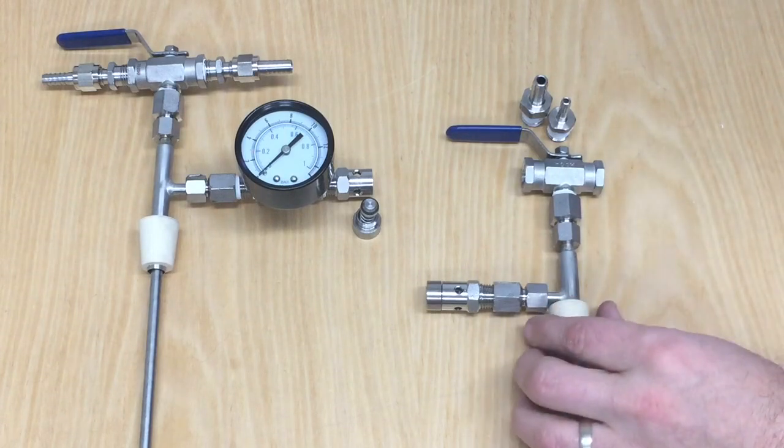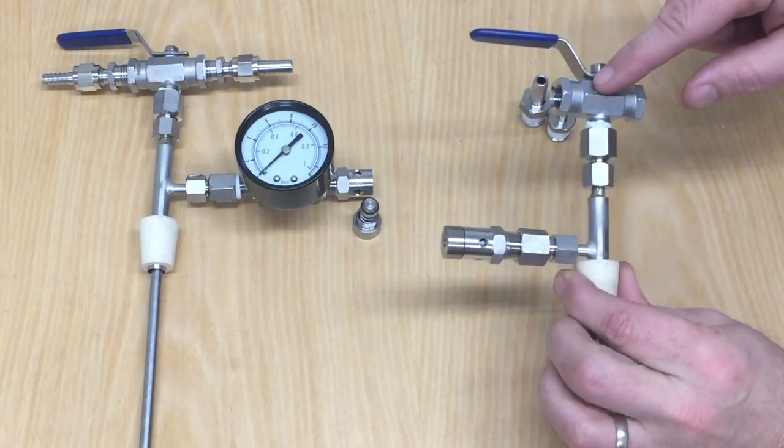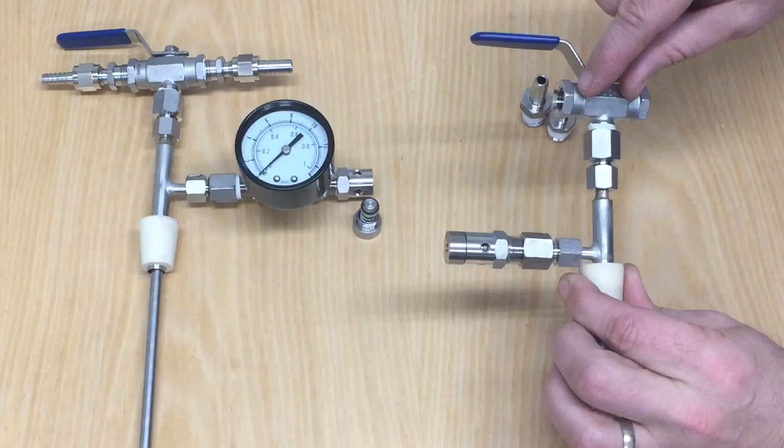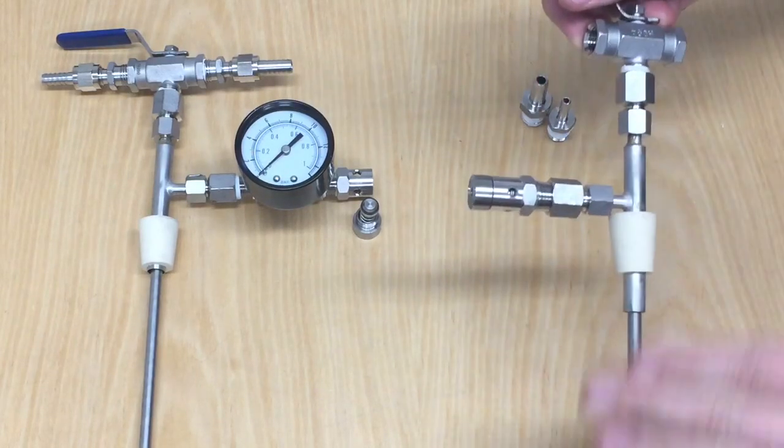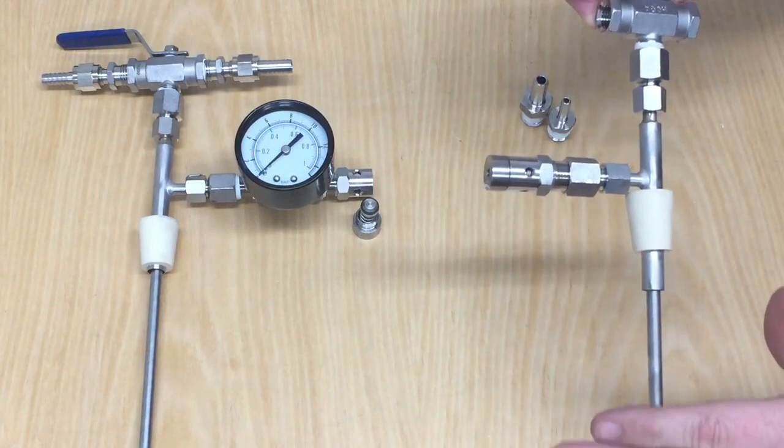The most common thing to happen is the ball to become loose in the seat that holds it, and you'll know this has happened because you close the valve and you still hear gas leaking out or liquid leaking through.